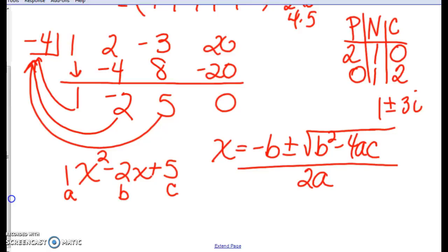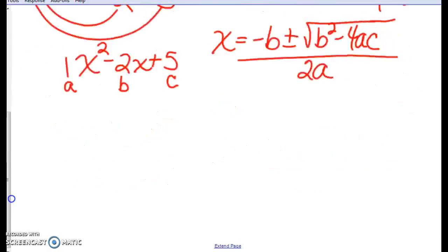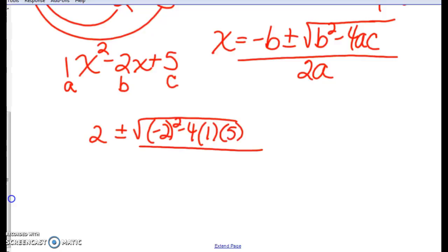So let's put those in and see what we get. We have B is negative 2. So a negative B would be a positive 2, plus or minus. Negative 2 squared minus 4 times 1 times 5. All over 2 times 1. And then I need to plug numbers in. Are we all set? Are we good? Okay.